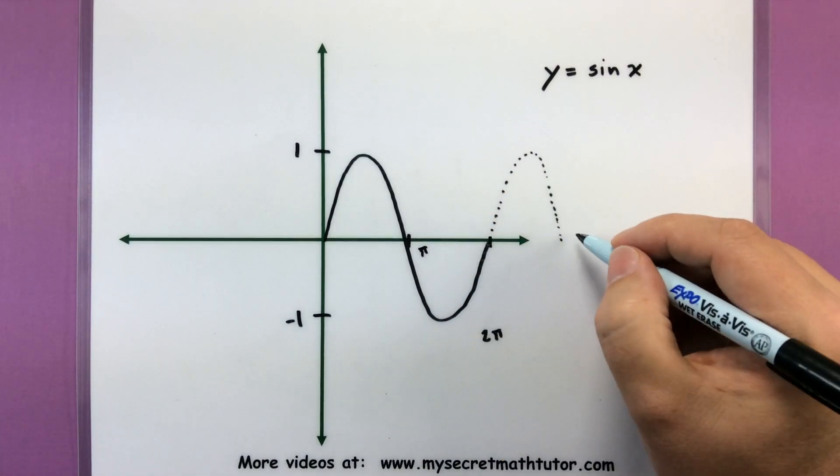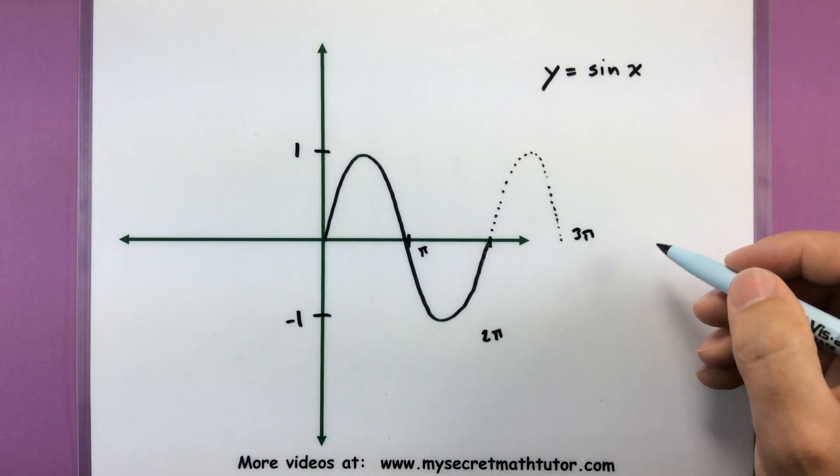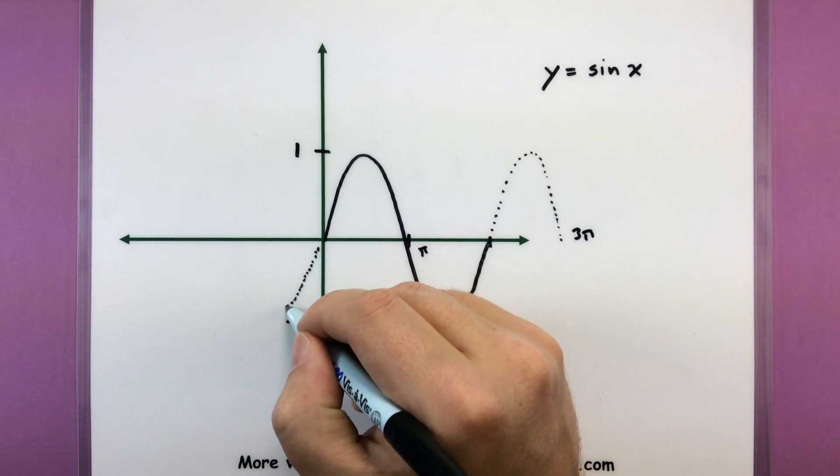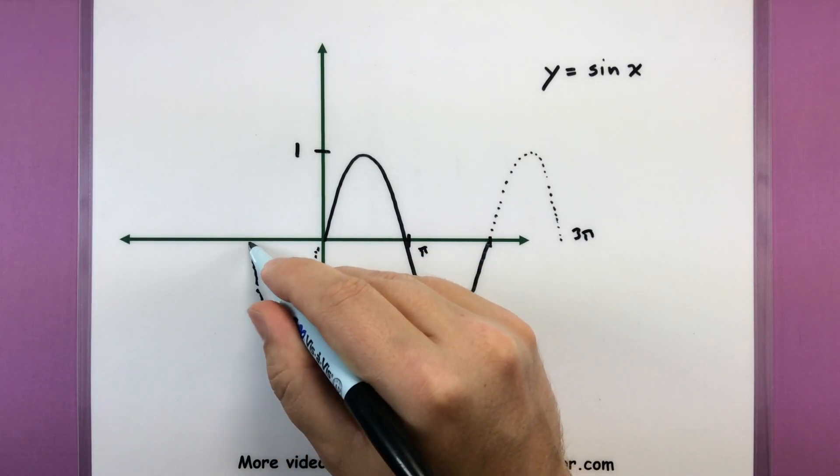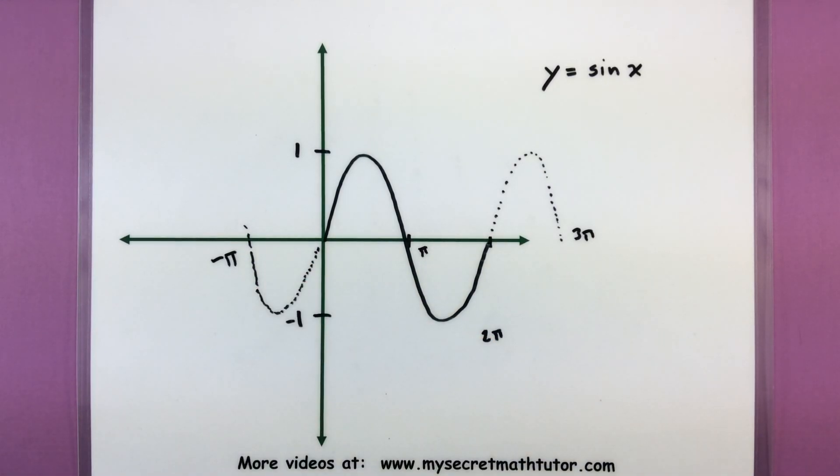So the next guy hits out here would be at 3 pi on the x-axis. Then it would come back up at 4 pi, and away we go. And of course we'd go this way as well, so down, it would hit there at negative pi, and just continue on. Alright, so let's go ahead and look at the graph of cosine and get some key values for that.